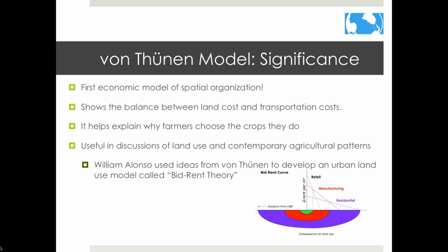Even though the Von Thünen model was created before factories, highways, and railroads, it remains an important model in geography. It was the first economic model of spatial organization and looked at the world in a completely new way. It shows the balance between land cost and transportation cost and helps explain why farmers choose the crops they do — including where it makes sense to produce low-value bulky commodities. The model is useful in discussions of land use and modern agricultural patterns. Von Thünen's ideas inspired other geographers, such as William Alonso, who used them to develop bid-rent theory for urban land use.